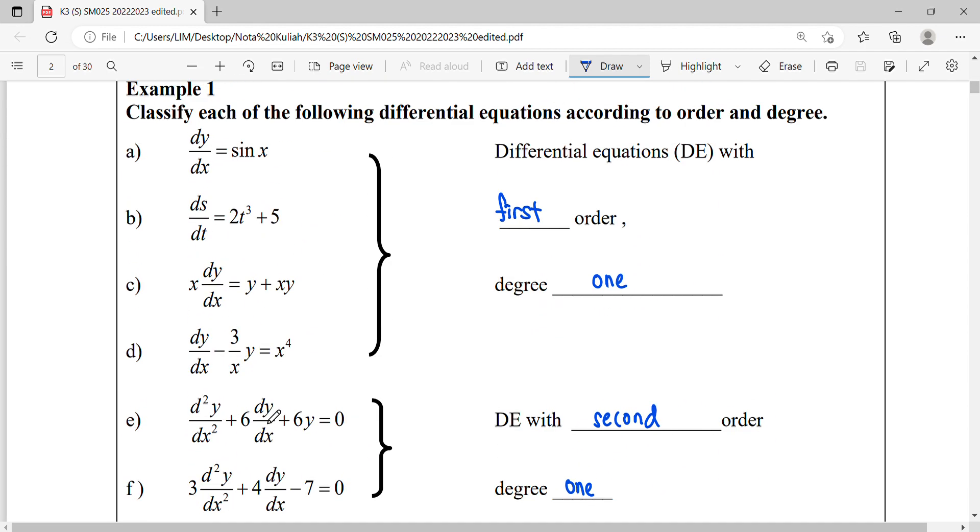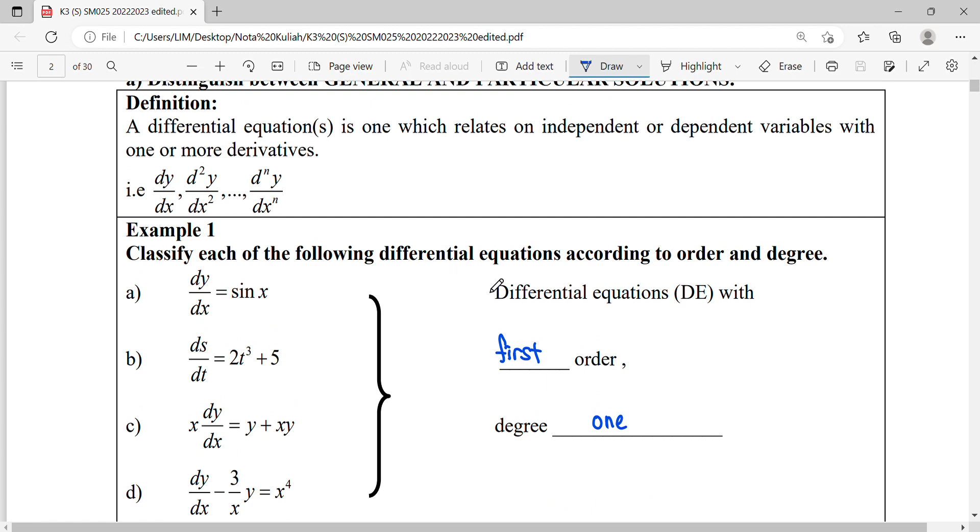So what we need to do here, we identify this differential equation. All this is order one, first order, because it is a first derivative. So it is first order. Degree means its power, all this power of one, first order degree of one.